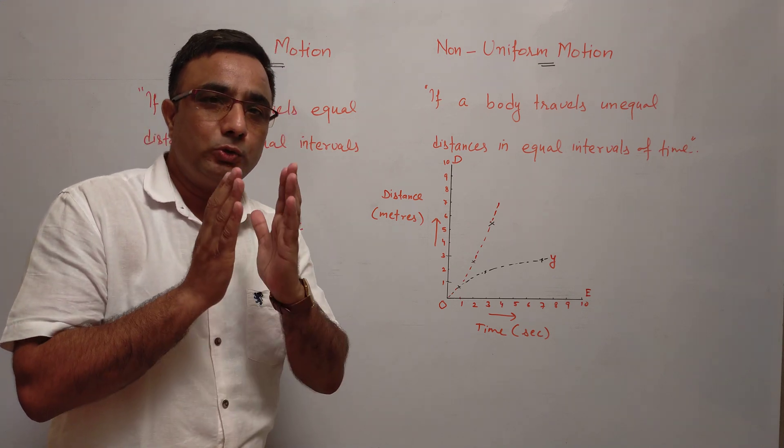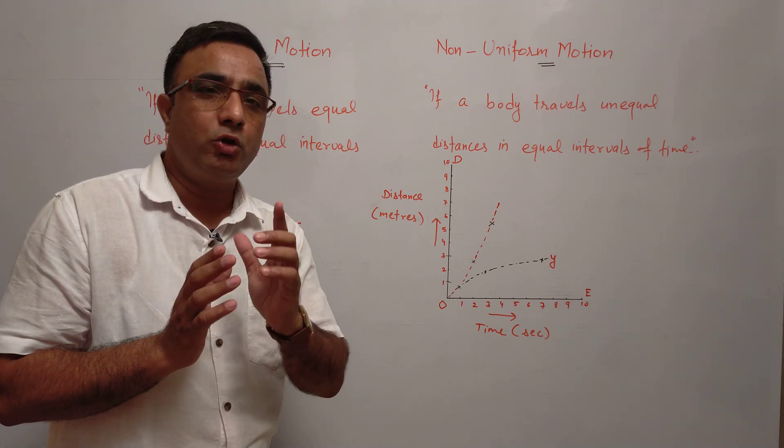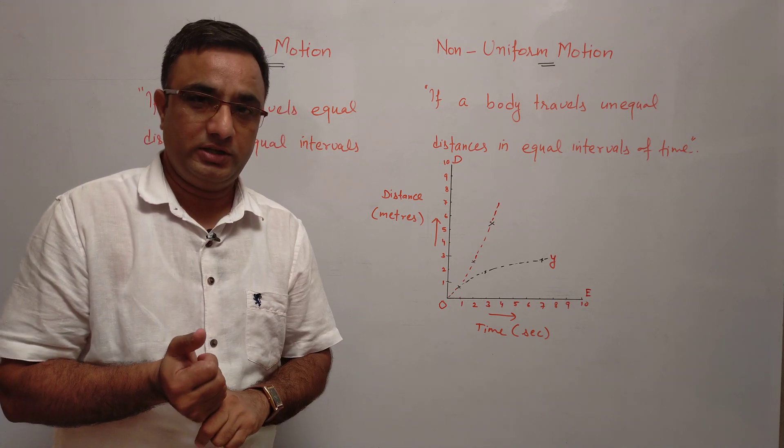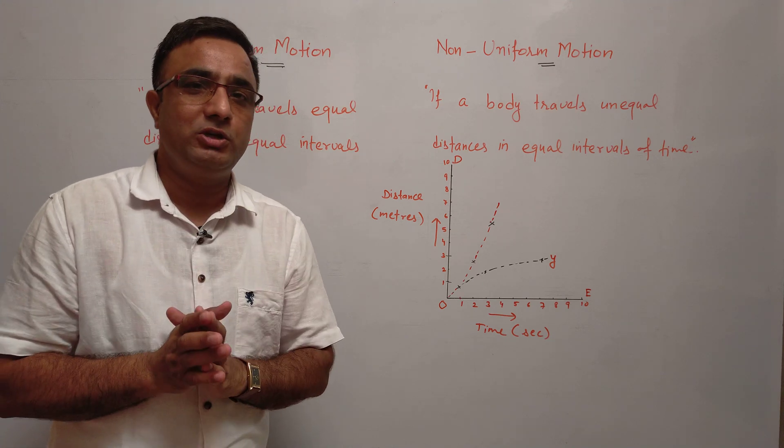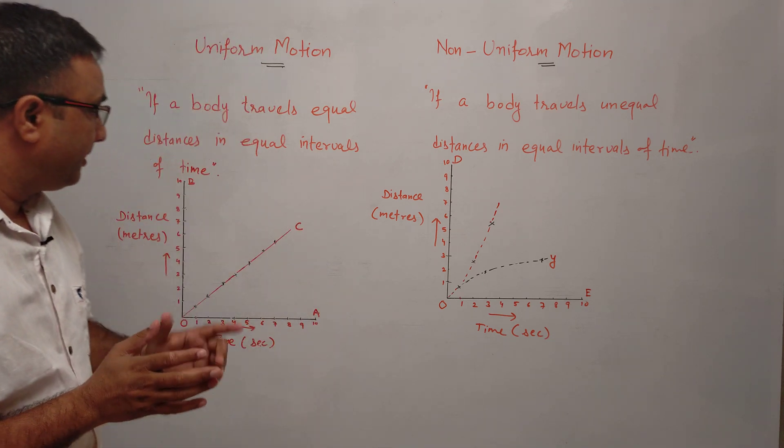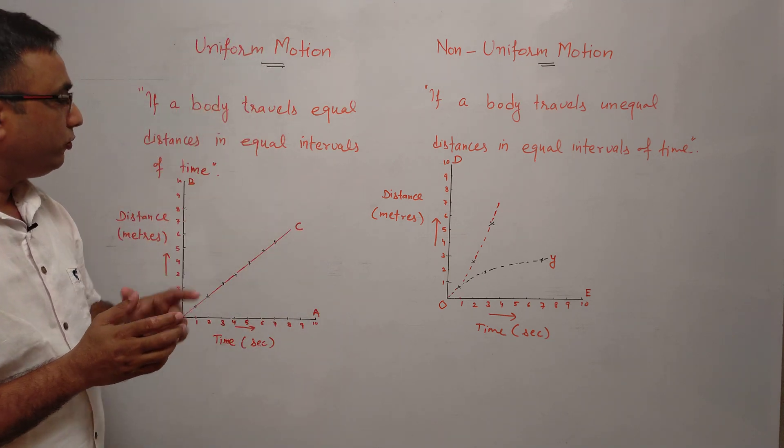If a body travels unequal distances in equal intervals of time, then that is called non-uniform motion. हम इसको graph से समझने की कोशिश करते हैं।